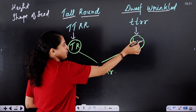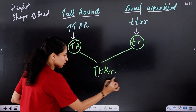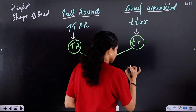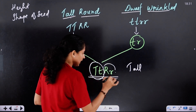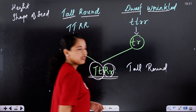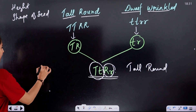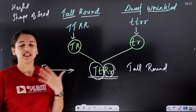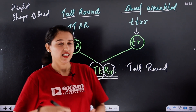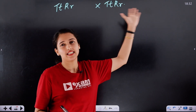After crossing, we have a heterozygous condition in F1. This is a heterozygous condition showing a dominant trait — that means tall. This is also heterozygous with a dominant trait — that is round seeded. So we have a tall, round seeded plant. This is the F1 generation, and we self-pollinate here.